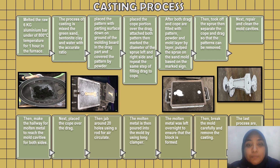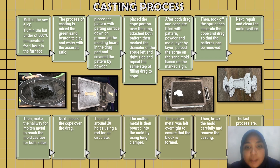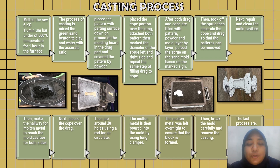The cope portion is placed over the drag, both patterns are attached, then the diameter of the sprue is marked on the left and right sides, and the same filling steps are repeated for the cope. After both drag and cope are filled with pattern, powder, and mold layer by layer, the sprue is pulled on the sand mold based on the marked side. Then the sprue is removed and the cope and drag are separated so the patterns can be removed.